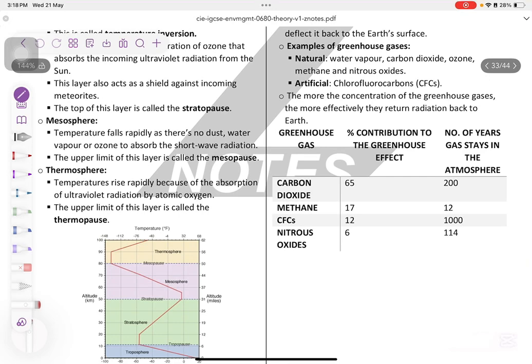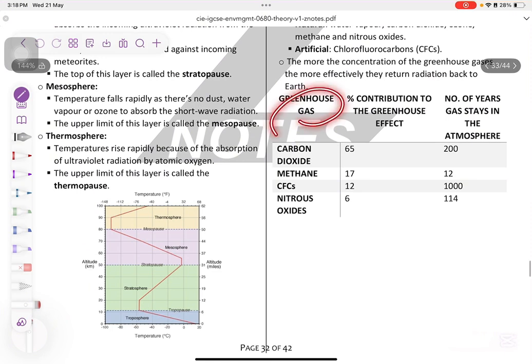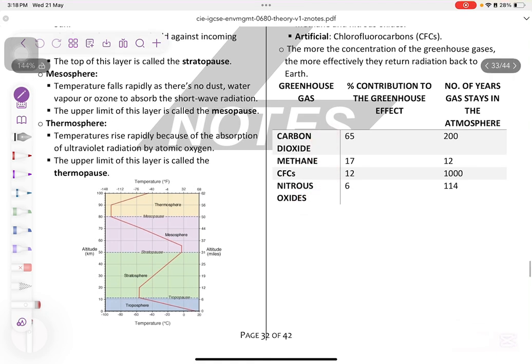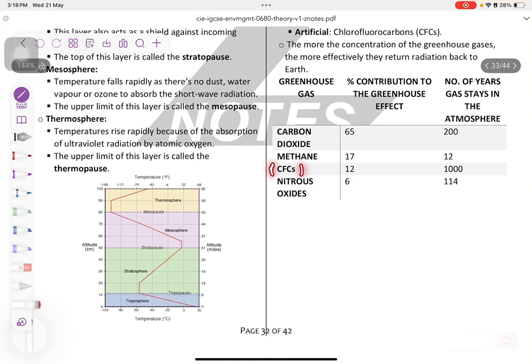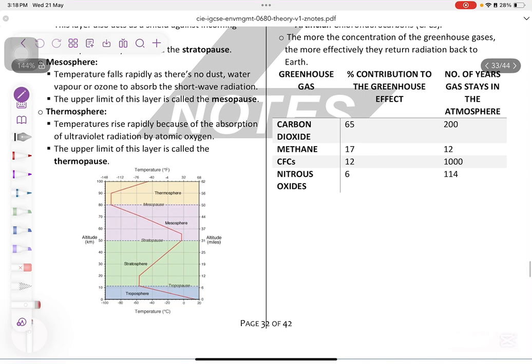The more the concentration of the greenhouse gases, the more effectively they return radiation back to the earth. You got your greenhouse gases, carbon dioxide, methane, CFCs, nitrous oxides. If you forgot the CFCs, it's okay. But focus on these two. And the water vapor as well. Very important. You don't really need to know their contribution or their percentage in the atmosphere, but just read this just in case.